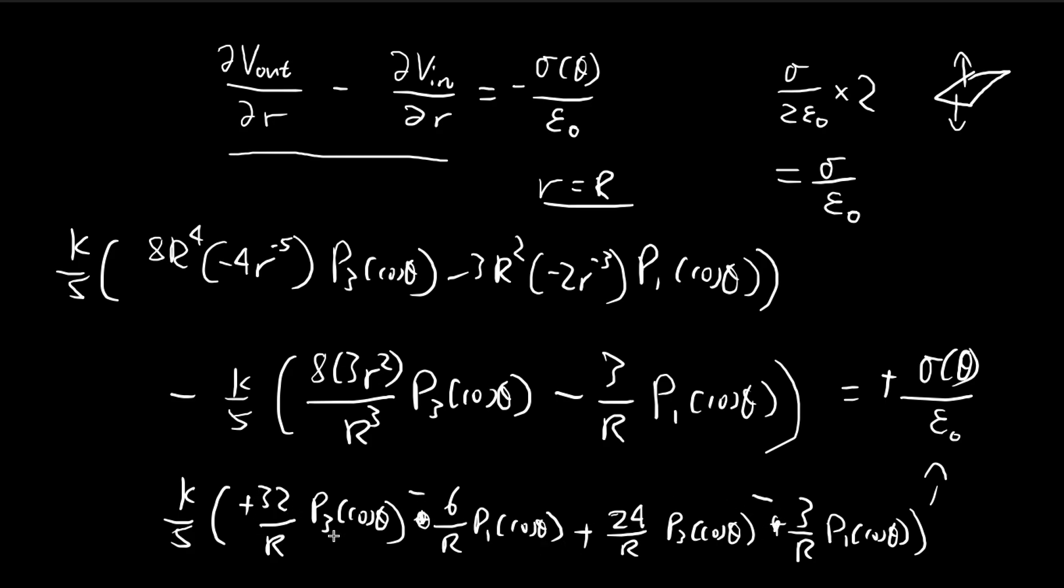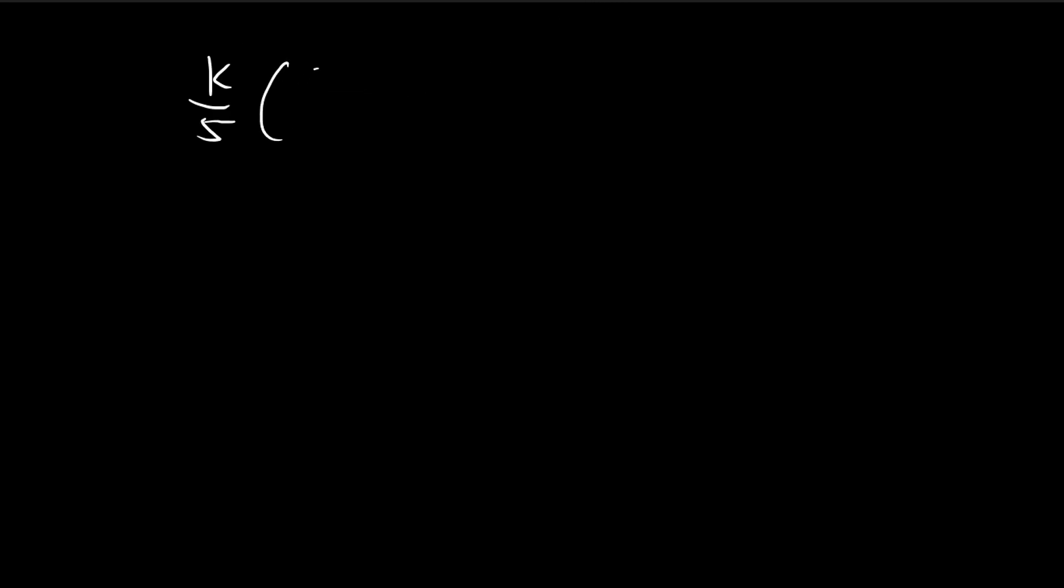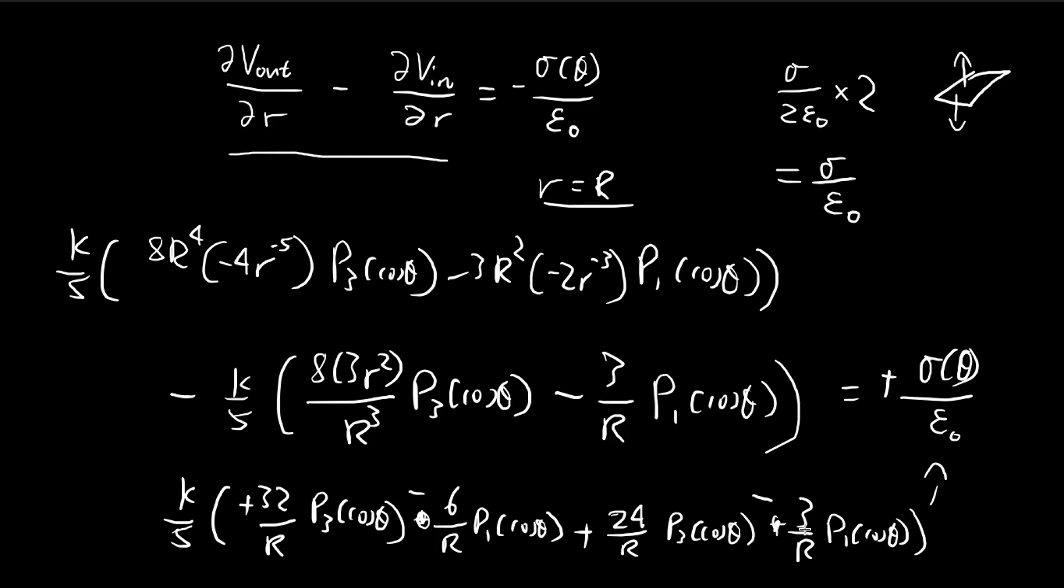So for the P3 terms, we have 56 of these. And then for the P1 term, we have, so 9 of these.